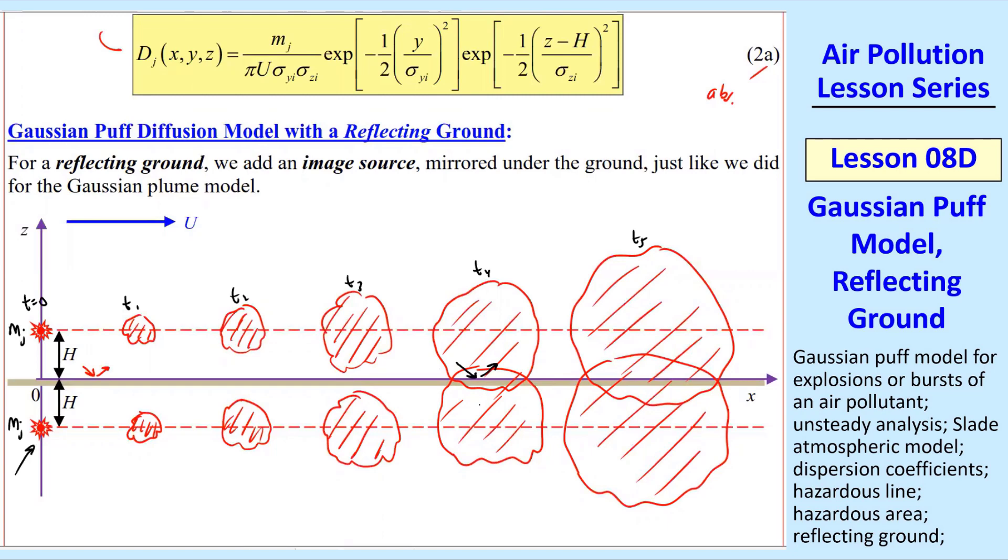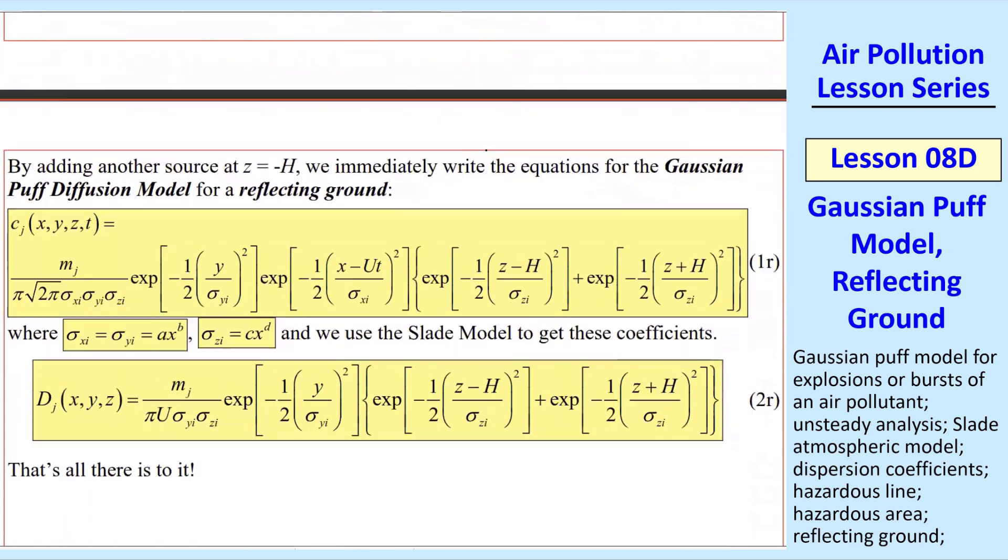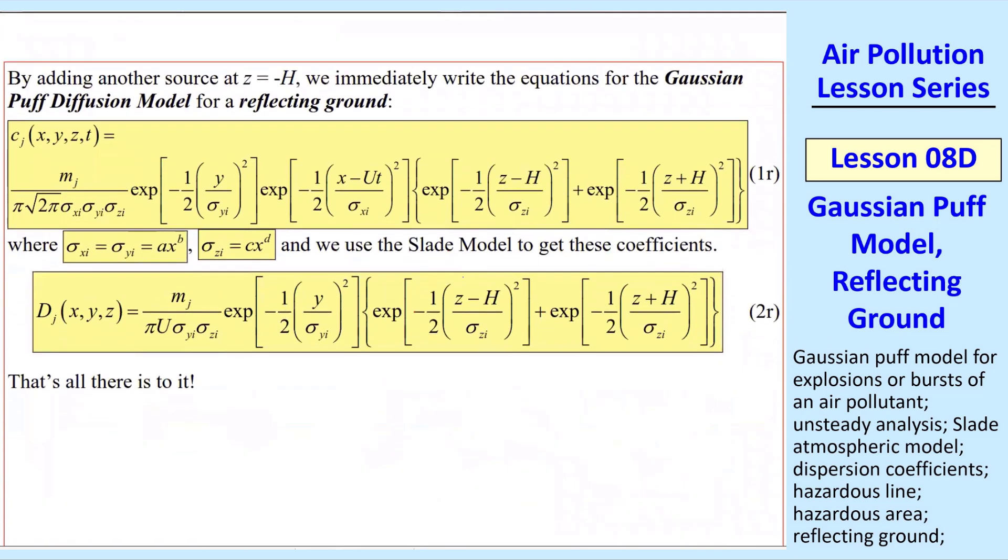These two are identical, just mirror imaged of each other. If you have some concentration due to the top one, you have an identical concentration due to the bottom one up here. So this portion is double whammy. Right on the ground, it's exactly a factor of two. This is very similar to the plume, just different equations.